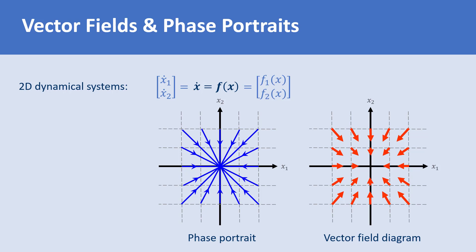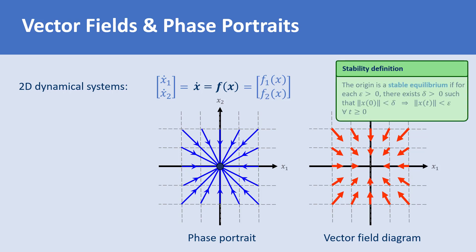From these two diagrams we can see that all trajectories starting near the origin converge to the origin, so the origin is an attractive equilibrium point. From the stability definition given in the previous lectures, the origin is stable: for any given epsilon, we can choose a set of initial conditions denoted by a green ball with radius delta, such that all solutions starting from the green ball remain in the purple ball for all time. Since the origin is both stable and attractive, we conclude it is an asymptotically stable equilibrium point.